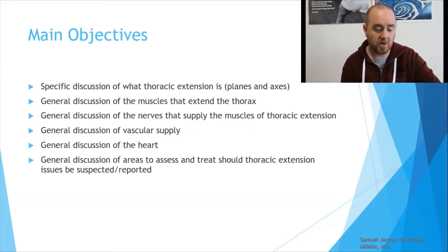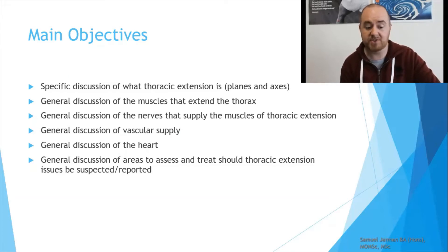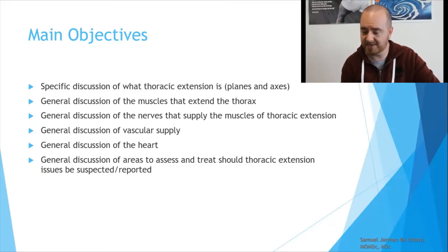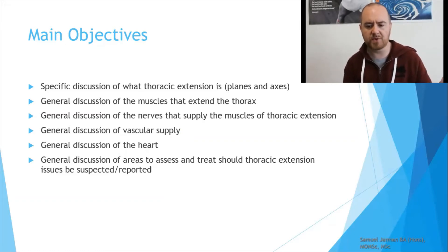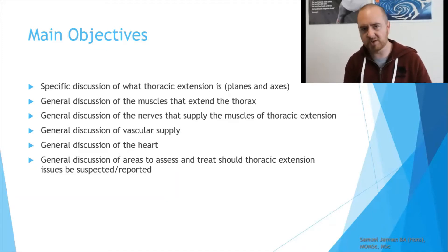Our main objectives are: a specific discussion of what thoracic extension is, including planes and axes; a general discussion of the muscles that extend the thorax; the nerves that supply those muscles; vascular supply to those muscles; a general discussion of the heart; and a general discussion of areas to assess and treat when thoracic extension issues are suspected or reported by the patient.